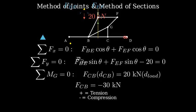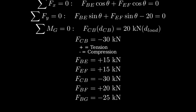Let's summarize our results. We found member BE is in tension at 15 kN. Member EF is in tension at 15 kN. Member CB is in compression at 30 kN. Member BF is in tension at 20 kN. And member BG is in compression at 25 kN.